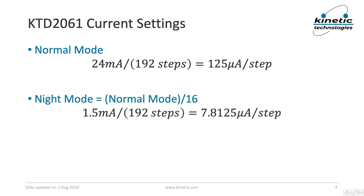The KTD2061 also includes a night mode that may be selected in the CTRL I2C register. Once in night mode, all normal current settings are just divided by 16. This results in 192 setting steps from 0 to 1.5 milliamps, and a step size of just under 8 microamps.